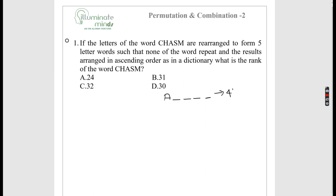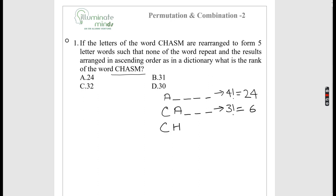Those can be arranged in 4! = 24 ways. Next comes C alphabetically. But I can't count all words starting with C because CHASM would be lost in between. So I go to 'CA' first — words starting with CA are 3! = 6. Then comes 'CH'. I won't complete CH either, so the answer lies between 30 and 36.